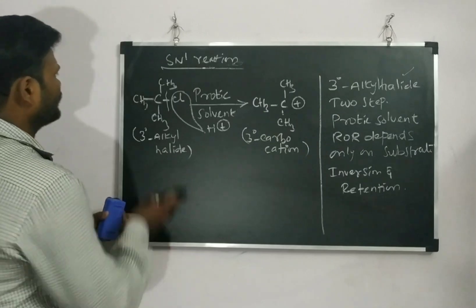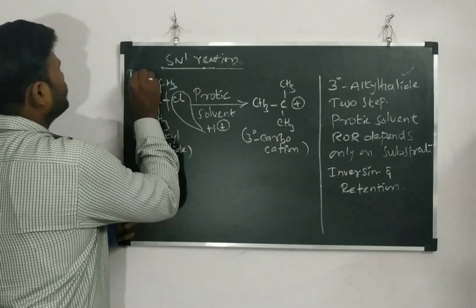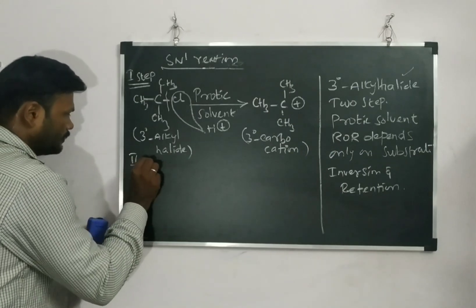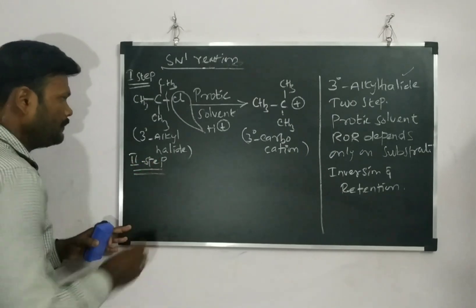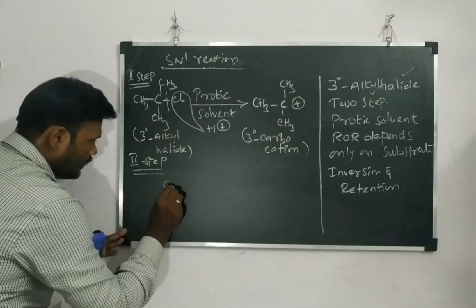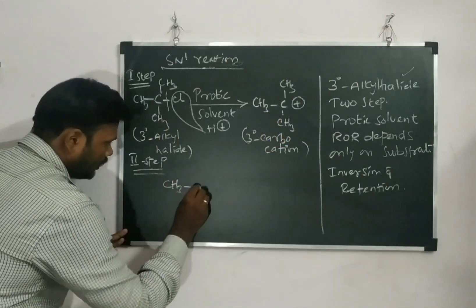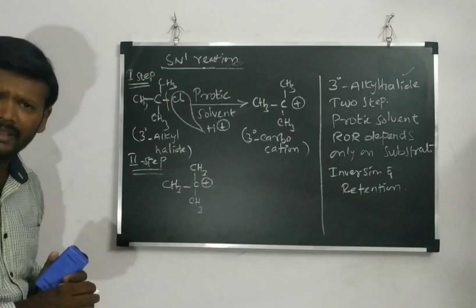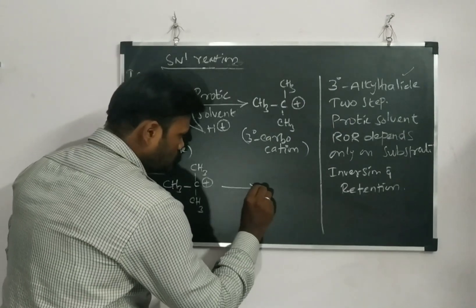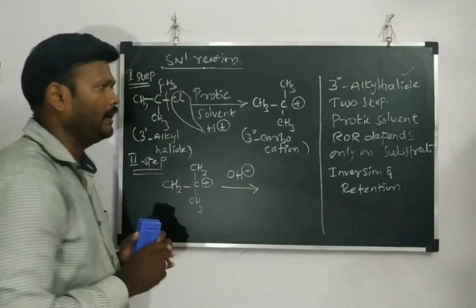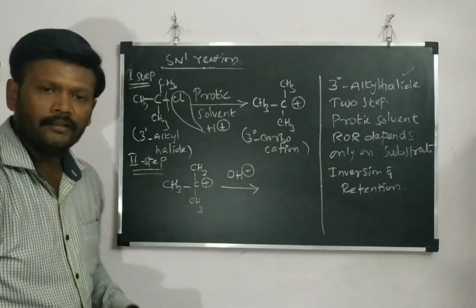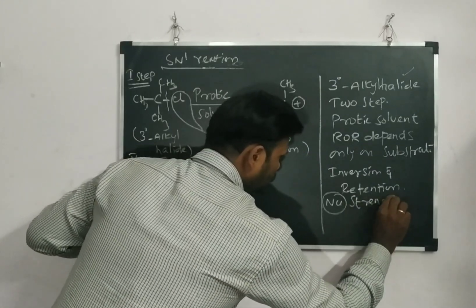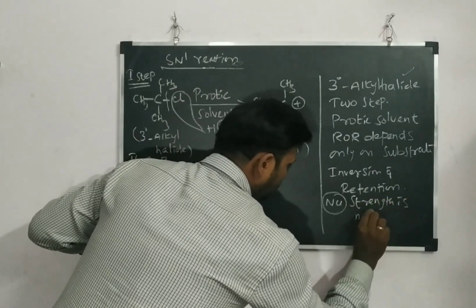This is Step 1, which is the ionization step. Now what is Step 2? In Step 2, I am going to write the 3rd degree carbocation — a carbon with CH3, CH3, CH3, and one positive charge. Now I am going to bring in the nucleophile. A very important point: the nucleophile strength is not important here.